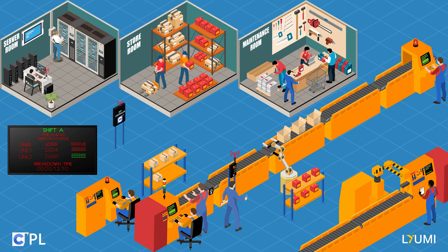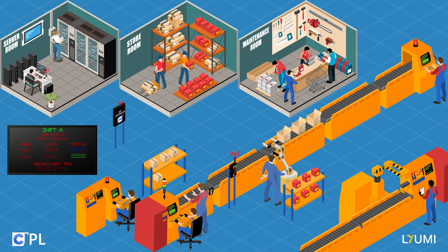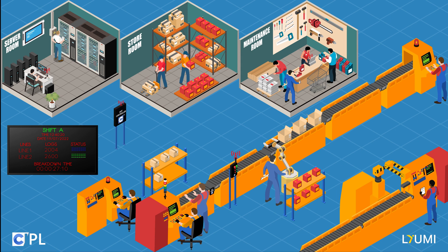The maintenance man quickly acknowledges the alert and rushes towards the Undawn station, clicking the acknowledgement green button to indicate that they have taken charge of the situation. Their years of experience and expertise come in handy as they quickly solve the conveyor belt problem and get the production line up and running again.